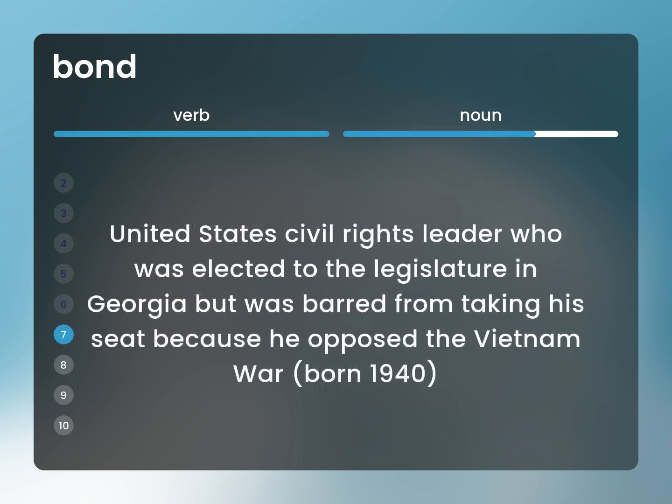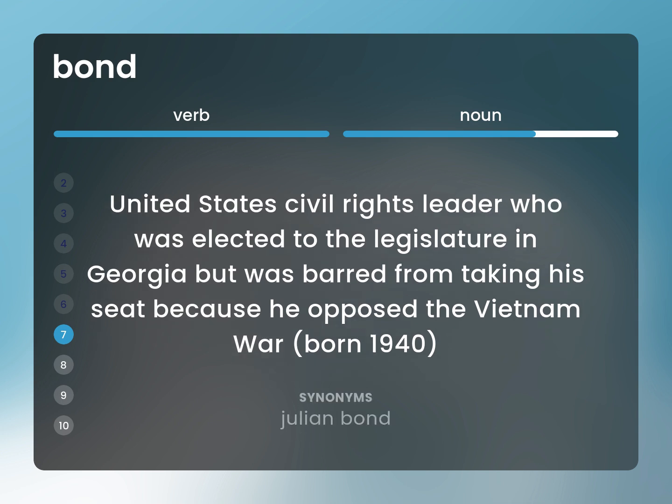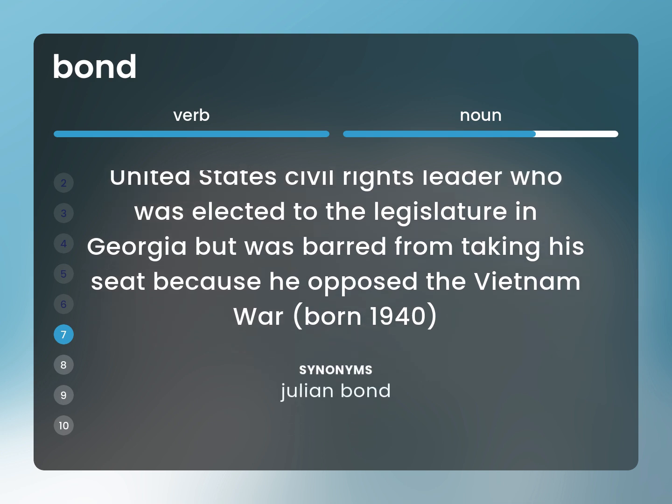United States civil rights leader who was elected to the legislature in Georgia but was barred from taking his seat because he opposed the Vietnam War. Born 1940. Julian Bond.